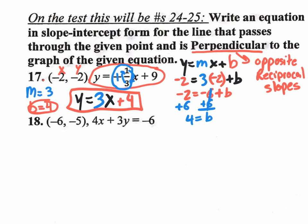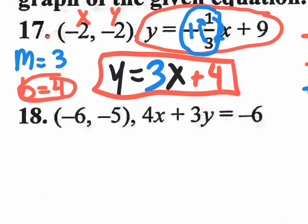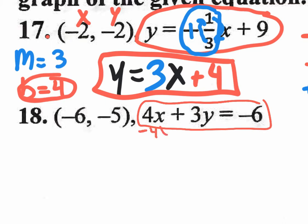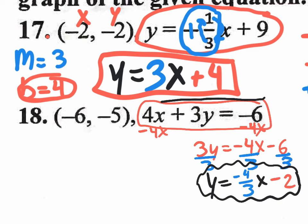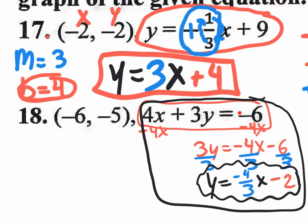On number 18, they give a point and tell us the equation is perpendicular to the given standard form equation. Since I can't see the slope in standard form, I need to rewrite it in slope-intercept form first. Subtract 4x: 3y = -4x - 6. Divide everything by 3: y = -4/3 x - 2. Now I can see the slope.